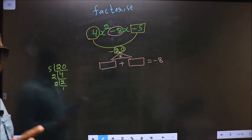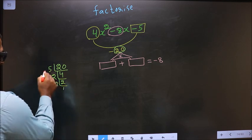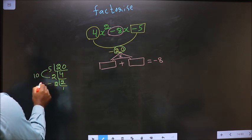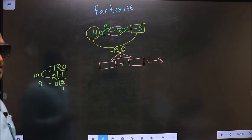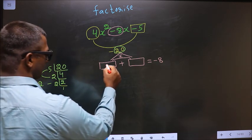So now the two numbers should be 5 × 2: 10 and 2. 10 - 2 = 8, 10 × 2 = 20.